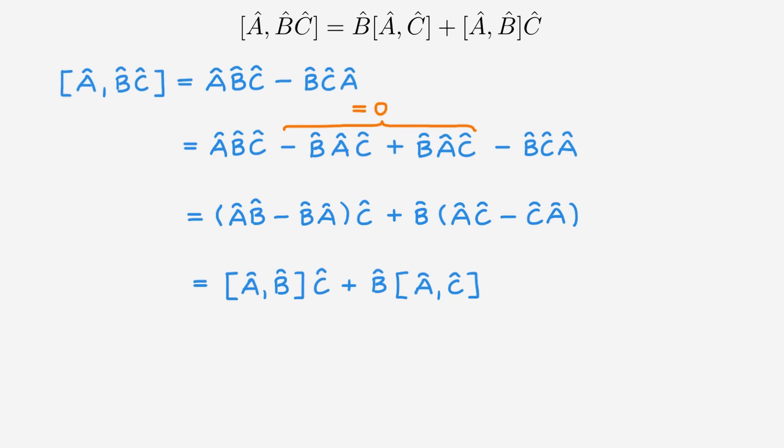This relation doesn't look as simple as the one we've discussed earlier. But actually is extremely useful in quantum mechanics so you'll find yourself using it all the time. For this reason it's worth remembering it and there's actually a relatively simple way to do that. What you do is you first write down all possible commutators that only involve two operators while keeping the operators in the same order as in the original expression.